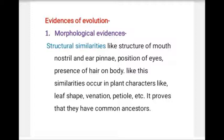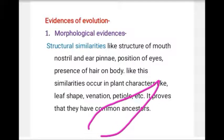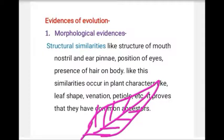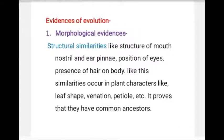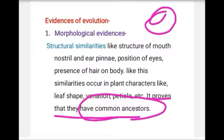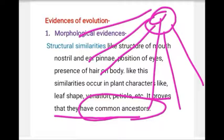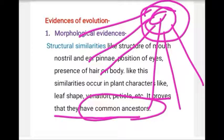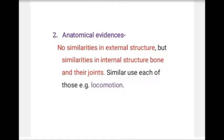Similarly, in plants too there are morphological similarities — for example, a mango plant's leaf has a similar structure including the petiole. All these external morphological structural similarities prove that the ancestor of these organisms is common or the same. Because the parent and ancestor are of a similar type, these similarities exist. This is the first morphological evidence.